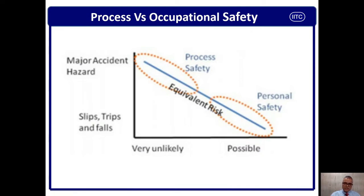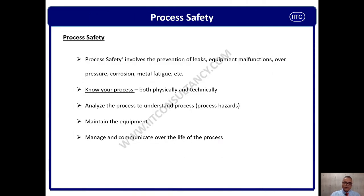You may be having any question or suggestion. I would encourage you to please participate in the comment section so that we can come back to you with your queries on an ASAP basis. Process safety involves the prevention of leak, equipment malfunction, over pressure, corrosion, and metal fatigue. This deals with process characteristics of pressure, temperature, flow, level and all these things. The essential elements are — we must know the processes both physically as well as technically to understand complete process safety. This is what is process safety management.